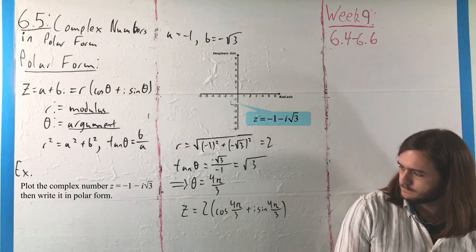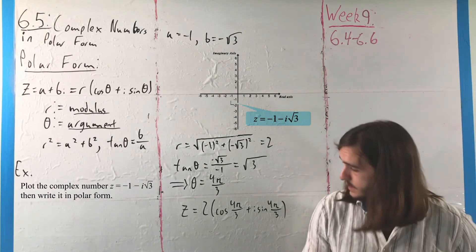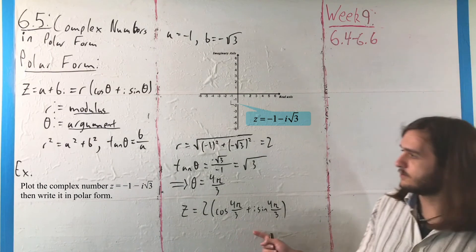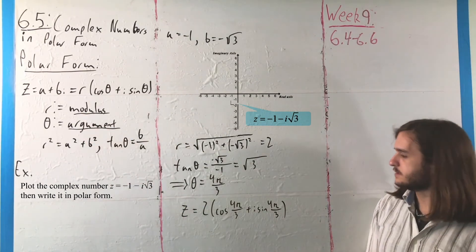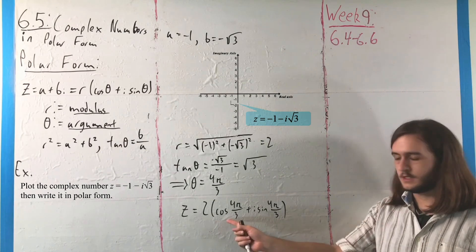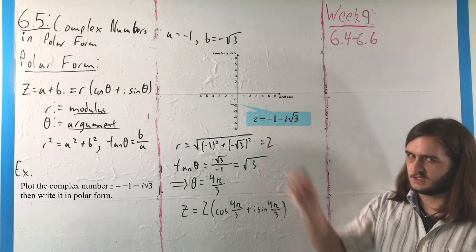Also, if we want to go in the other direction, from polar to rectangular, it's actually much easier - all you have to do is evaluate at these two points, multiply in r, and that's what you'd get.